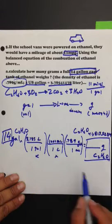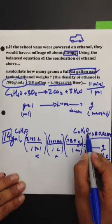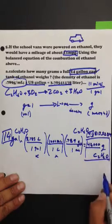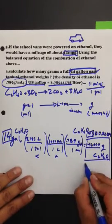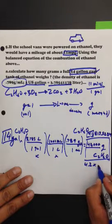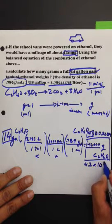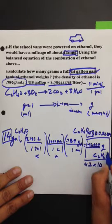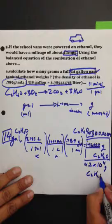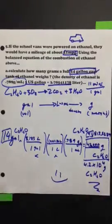So really, the limiting one is two. So our answer has to be in two significant digits. So we can call this 42,000 grams. Or, even better, to show the significant digits, 4.2 times 10 to the 1, 2, 3, 4. 10 to the 4 grams of C2H6O. Okay. There you go.